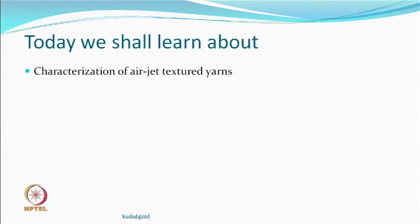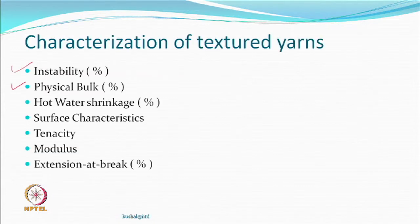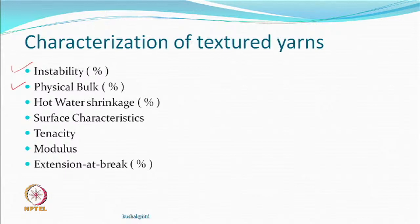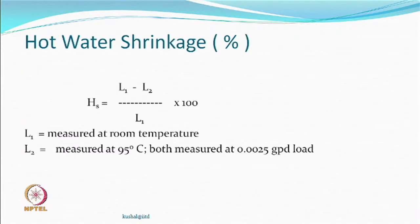Today we look at other ways of characterizing textured yarns. The characterization techniques include instability and measurement of bulk. Bulk can be measured in many ways, but winding on a package and looking at package density ratios has been used as the more realistic way of describing the increase in bulk. Hot water shrinkage is also relevant for any synthetic thermoplastic material affected by temperature.